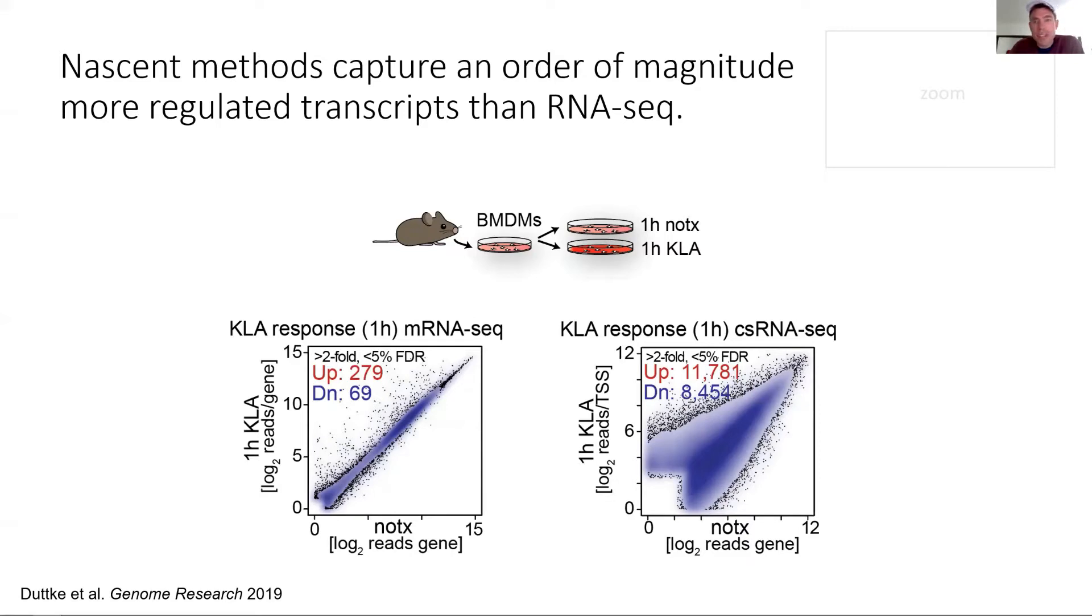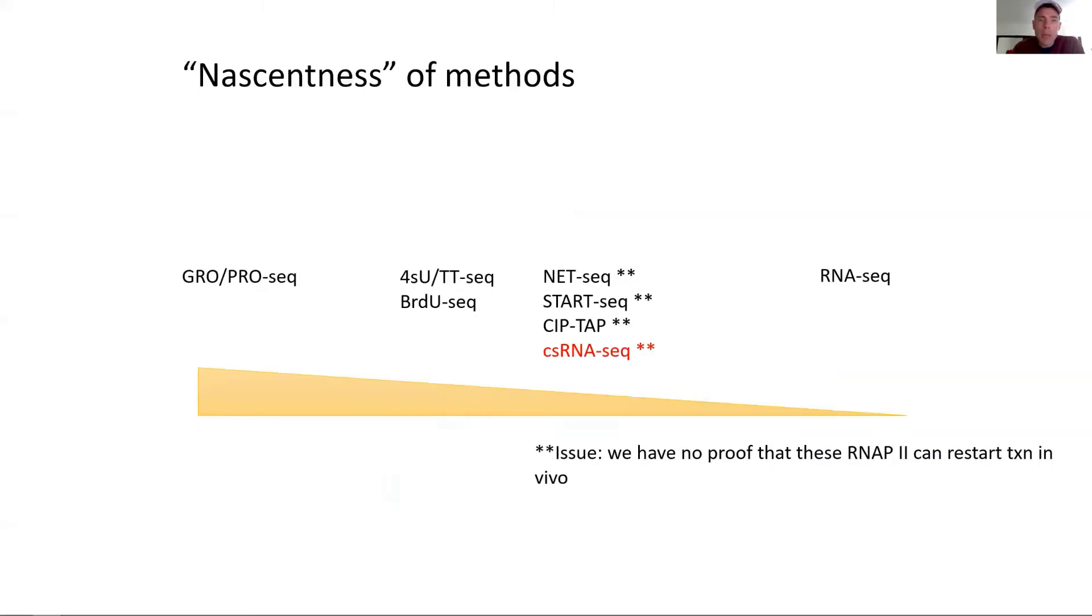When we stimulate macrophages with KLA, which is telling these immune cells that there's some bacteria floating around somewhere, you capture about 350 differentially regulated genes with mRNA but over 20,000 differentially regulated TSRs, promoters, enhancers, and forth using CSRNAseq. I don't need to tell you what's easier to identify the motifs that underlie the signaling. You just have more computational power.